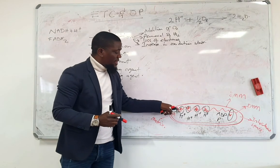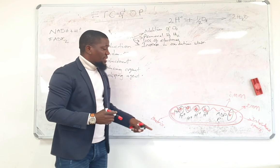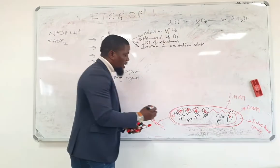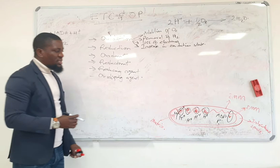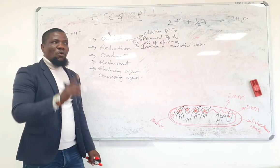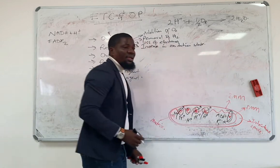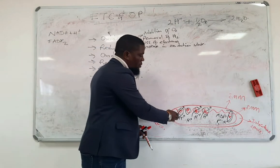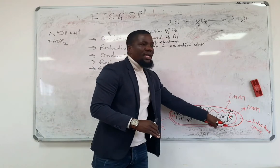Complex one works as a channel that is able to allow the movement of protons from the matrix and into the intermembrane space — it only allows them to go out. This is the same with complex three and complex four. While complex five allows protons to move from the intermembrane space back into the matrix. So complexes 1, 3, and 4 move protons from the matrix into the intermembrane space; complex 5 moves protons from the intermembrane space into the matrix.